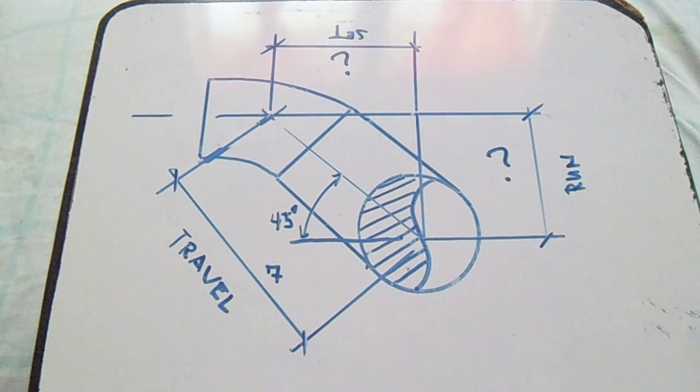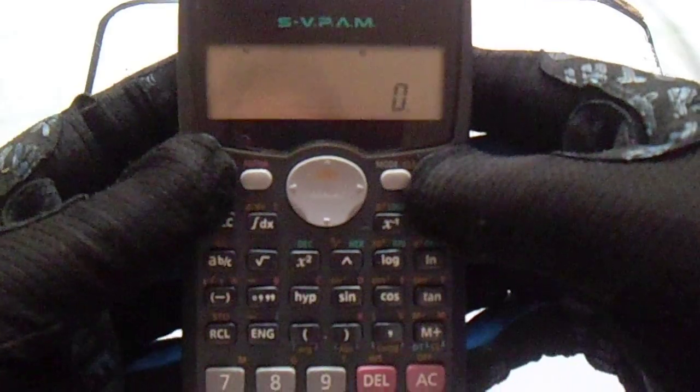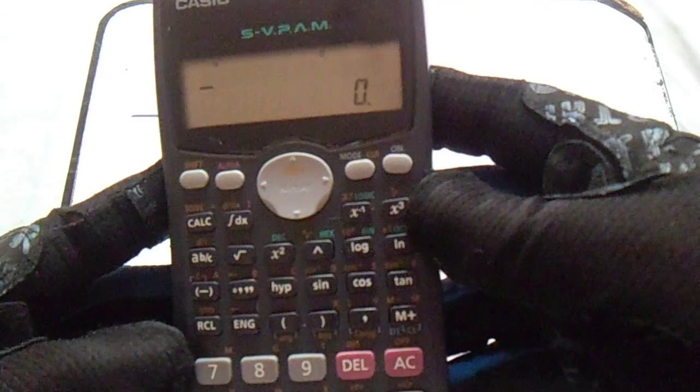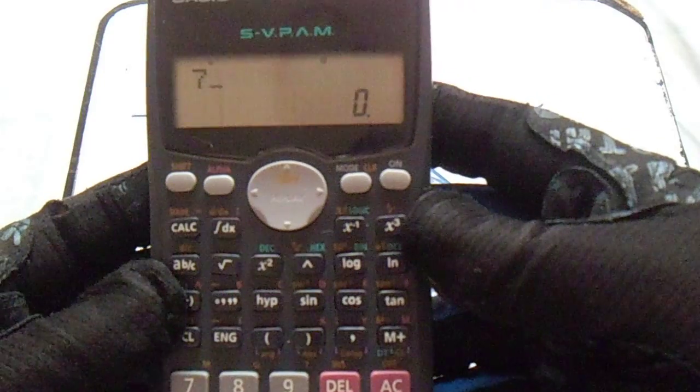To find that using this calculator fx100ms, travel 7 multiply it to sine 45. This is our answer for set. We have 4.9.